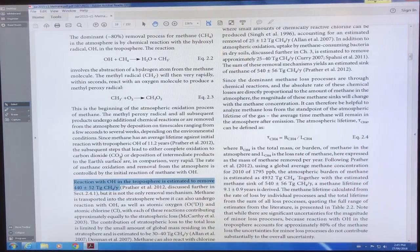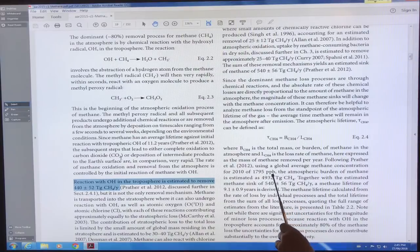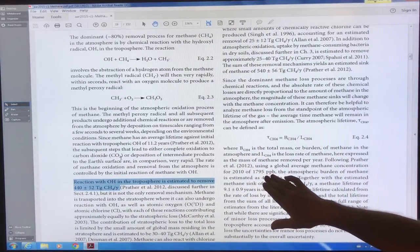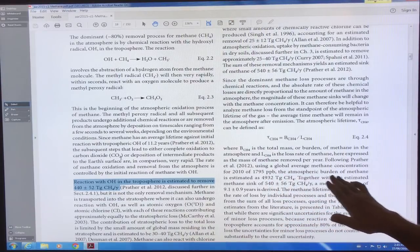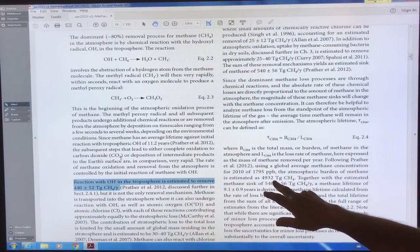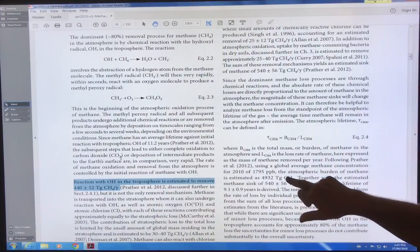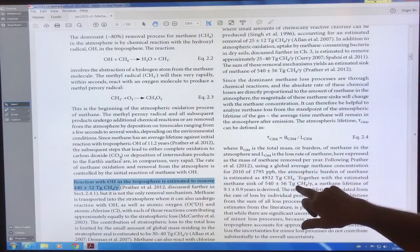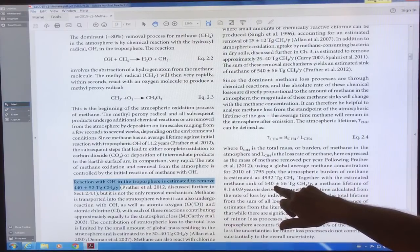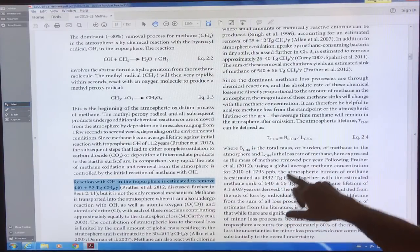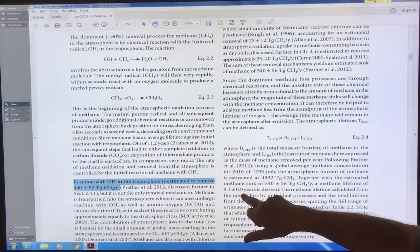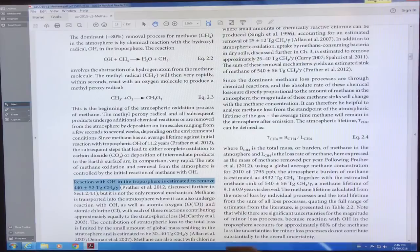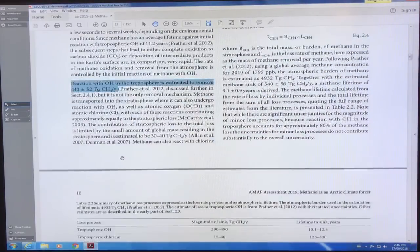So here we go. In 2012, using a global average methane concentration of 1795 ppb, the atmospheric burden is 4932 teragrams. So this is a conversion between ppb and teragrams. And with the sink of 540 plus or minus 56, you get a methane lifetime of 9.1 years plus or minus 0.9 years.